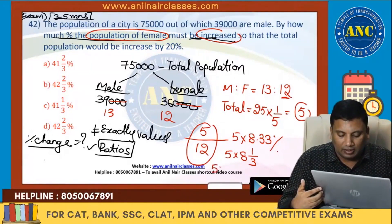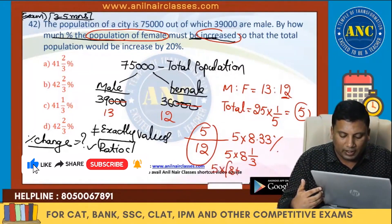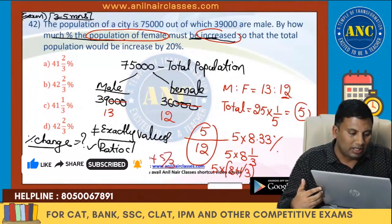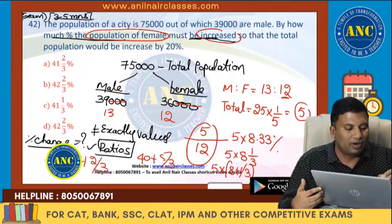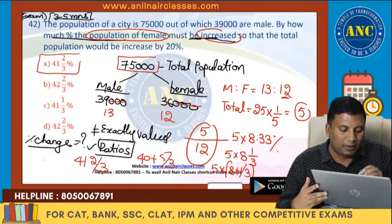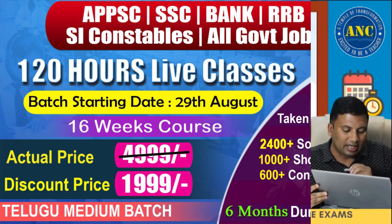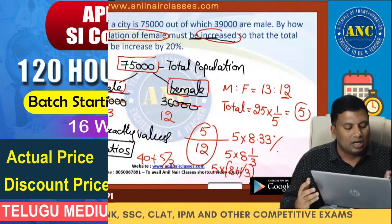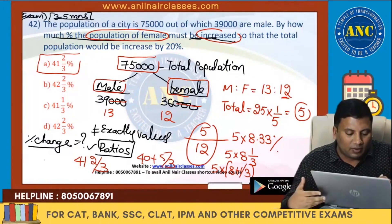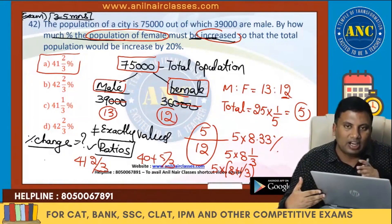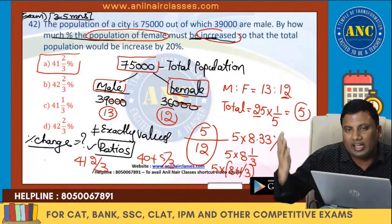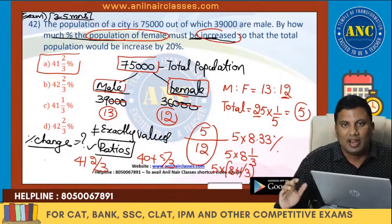So 5 × 8⅓ = 40 + 5 + 5/3 = 41⅔. The answer is 41⅔. No calculation of exact male or female numbers needed. 75,000 is total, 39,000 male, 36,000 female. For percentage increase, I only need the ratio — male ratio 13, female ratio 12.